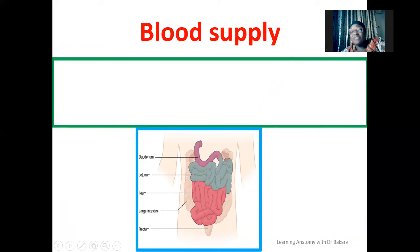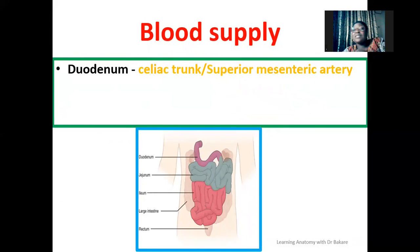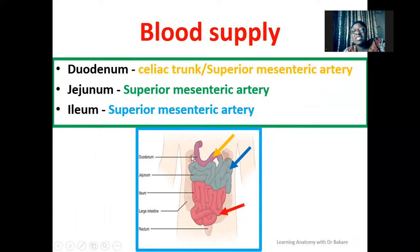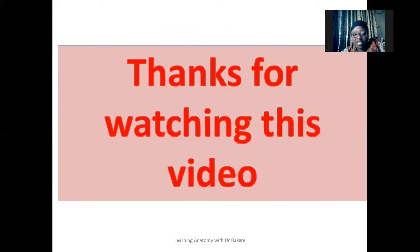For blood supply: the small intestine has three sub-regions. The duodenum is supplied by branches from the celiac trunk and also the superior mesenteric artery. The jejunum is supplied by branches from the superior mesenteric artery. The terminal region, the ileum, is also supplied by branches from the superior mesenteric artery. Thanks for watching this video — let's meet again.